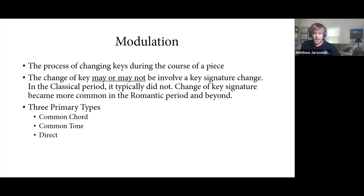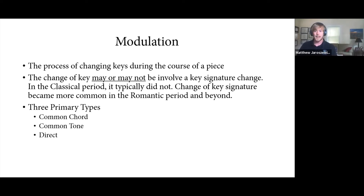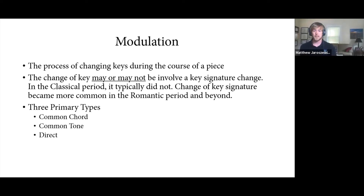Composers can modulate — simply change keys from one tonic to another. When looking at a piece, the change of key may or may not involve a key signature change. In the Classical period and early Romantic period, composers typically did not write a new key signature, so you have to figure it out by noticing a lot of sharps or natural signs appearing that weren't there before.